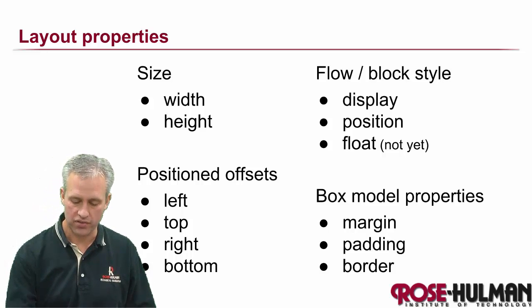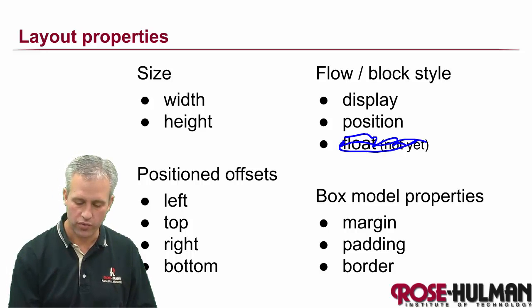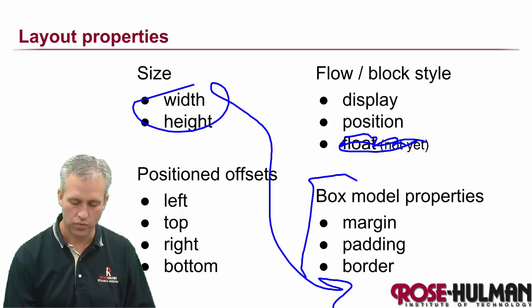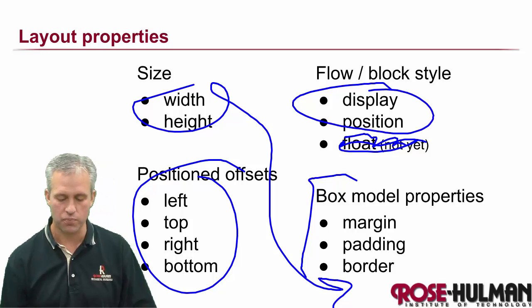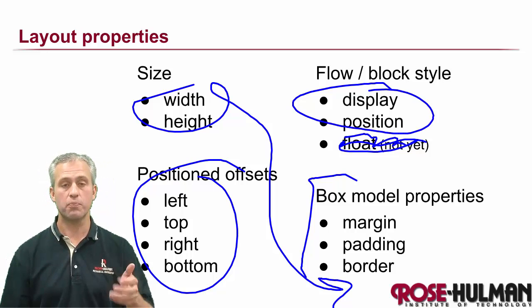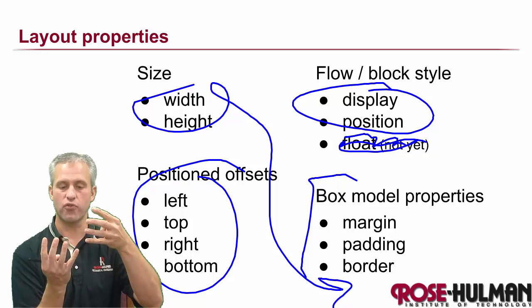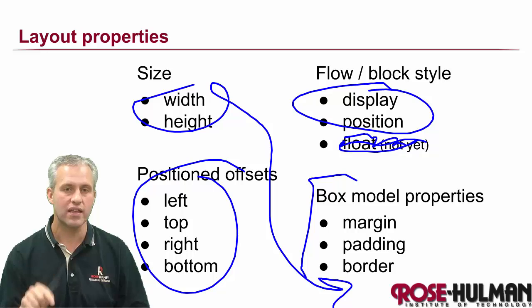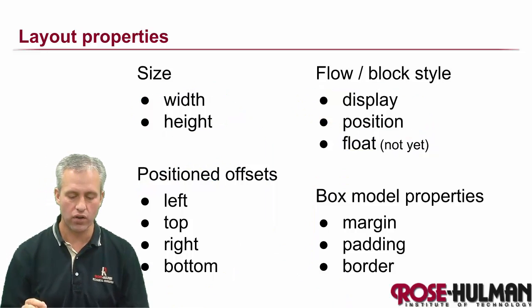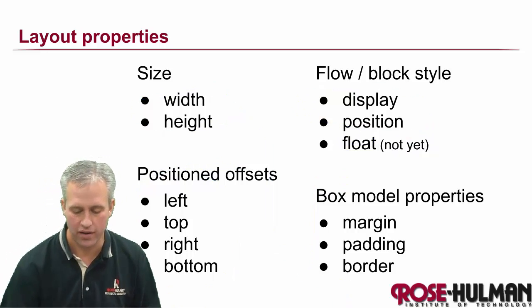So there are a lot of properties that interact. We're not worried about float yet, but we know about all these others. We know about the box model rules. We know about these position offsets and we know about display and position. So display and position, there's four options here, there's four options here. That means there's 16 possible combinations.